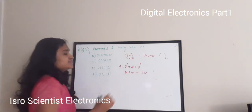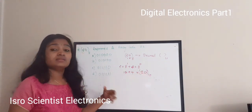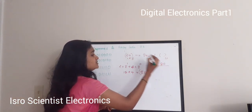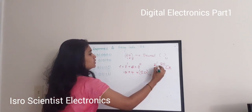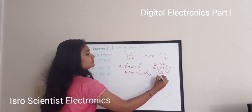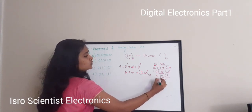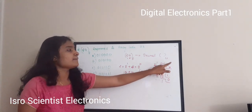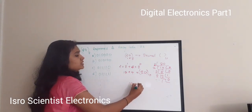Now find the binary representation of 20 by repeated division by 2: 20 ÷ 2 = 10 remainder 0; 10 ÷ 2 = 5 remainder 0; 5 ÷ 2 = 2 remainder 1; 2 ÷ 2 = 1 remainder 0; 1 ÷ 2 = 0 remainder 1. So the binary representation is 1, 0, 1, 0, 0.